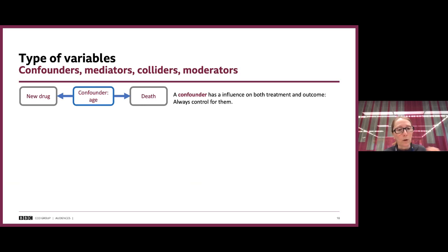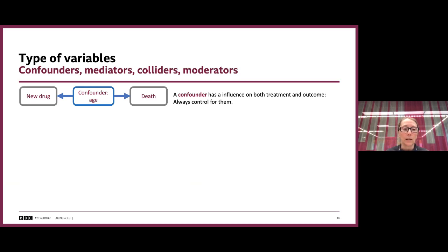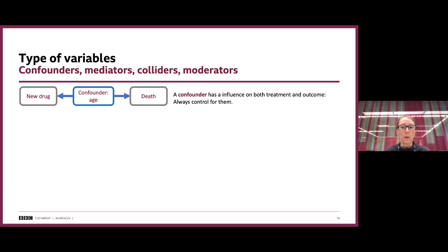There are different types of variables in a causal graph. The first is the confounder — as shown by arrows pointing out, it's something that has an influence on both the treatment and the outcome. For example, if we want to understand the effect of a new drug on treating heart disease, age is the confounder. We really have to control for any confounder — it's a really important one.